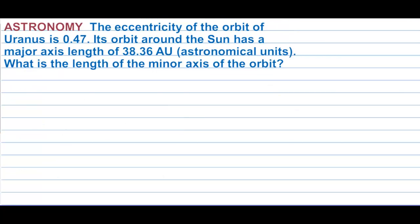The eccentricity of the orbit of Uranus is 0.47. Its orbit around the sun has a major axis length of 38.36 AU, or astronomical units. What is the length of the minor axis of the orbit? Eccentricity equals c over a.